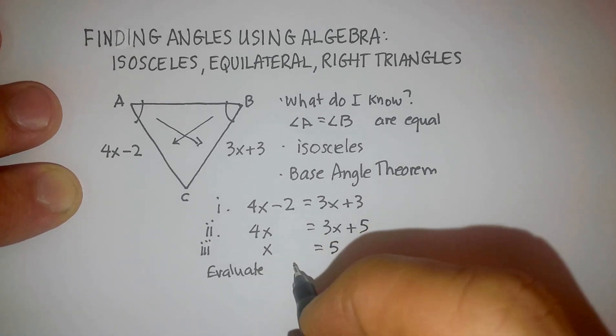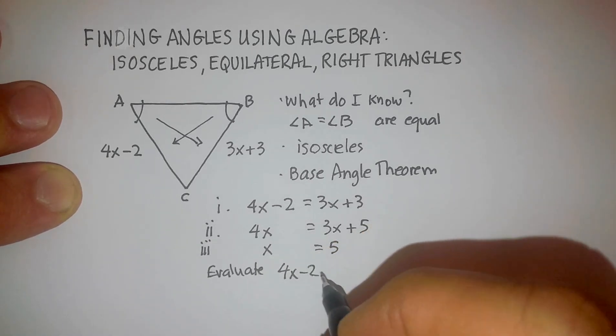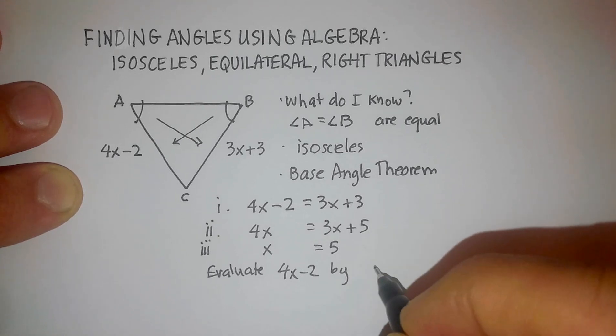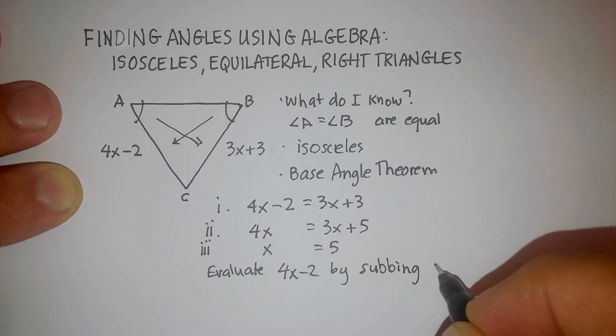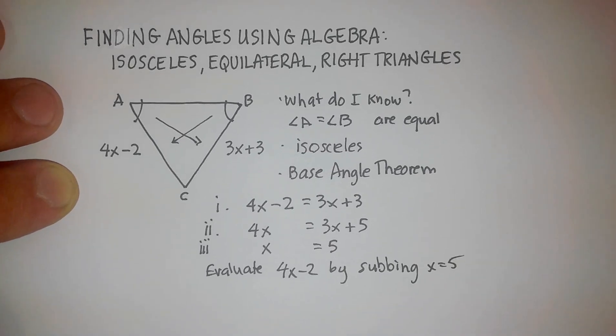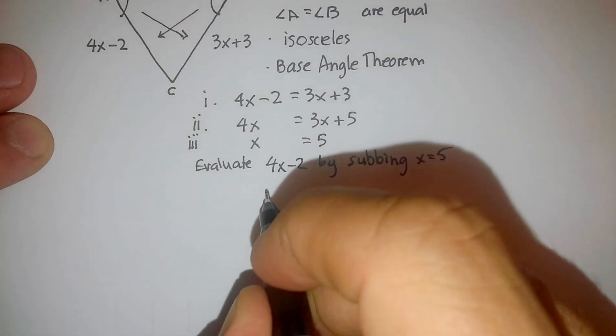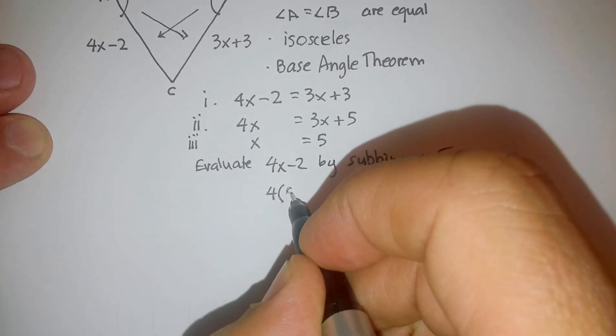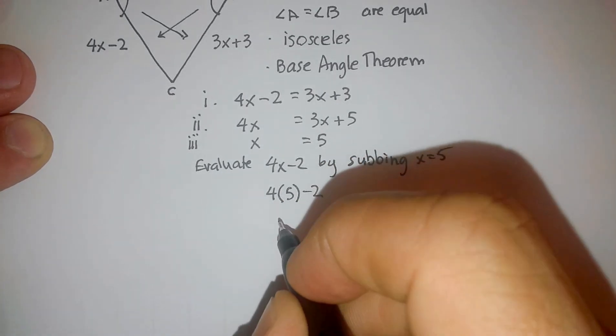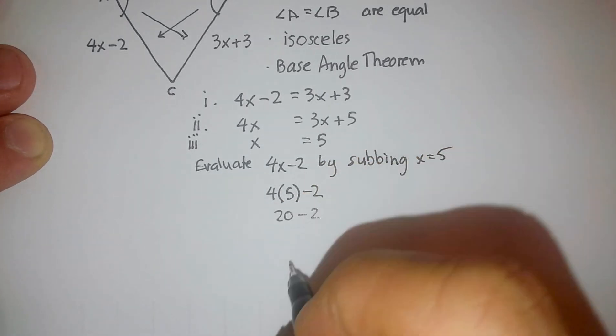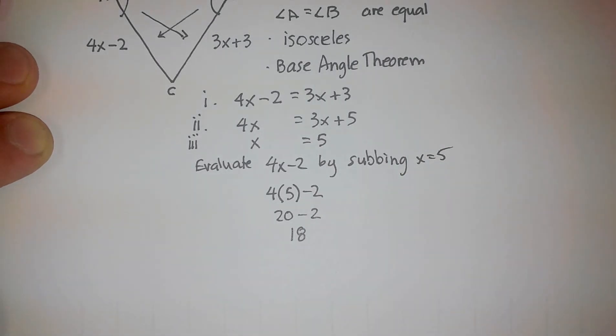Evaluate 4x minus 2 by subbing x is equal to 5. So let's do that, and that's going to give me 4 times 5 minus 2, or 20 minus 2, or 18.